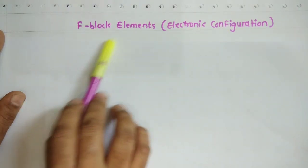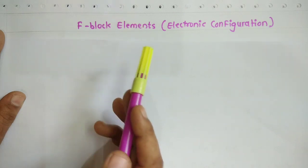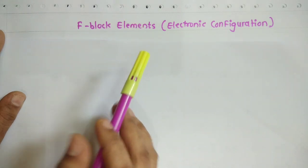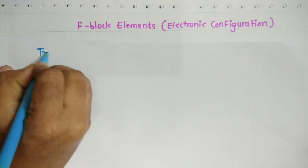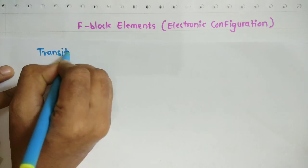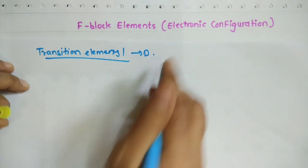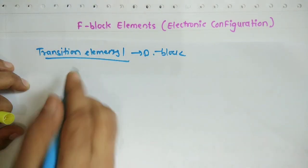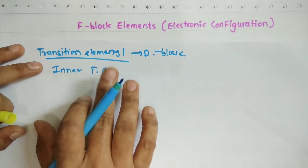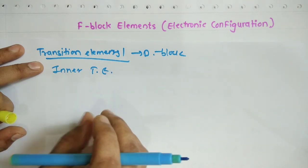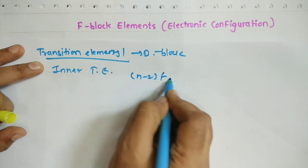Before starting this session, to identify the electronic configuration for the f-block elements, we should first understand the meaning of f-block elements. Basically, these f-block elements are called inner transition elements. Just as d-block elements are called transition elements, the f-block elements are known as inner transition elements because the last electron enters into the penultimate shell, that is the n minus 2 f orbital.